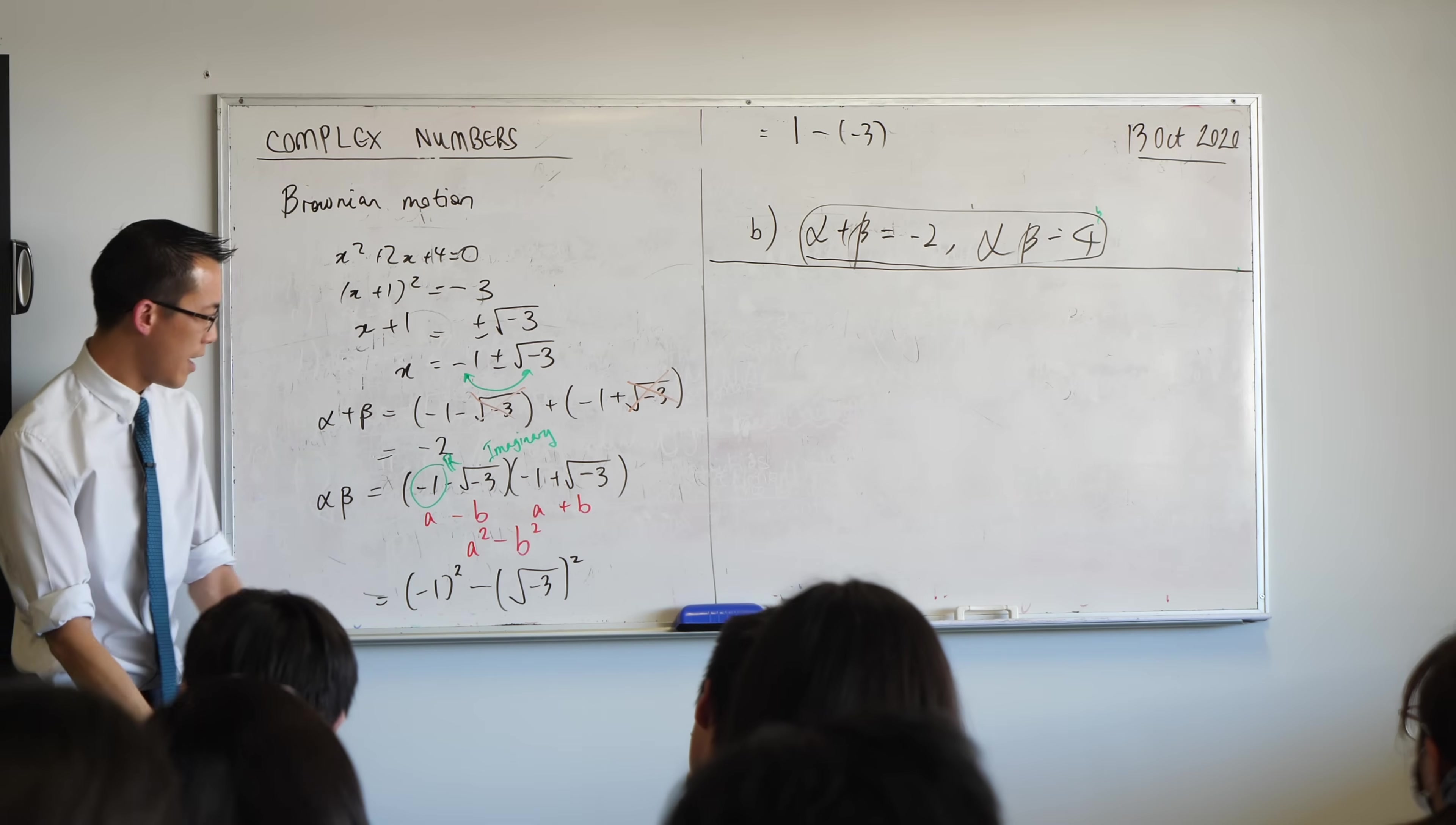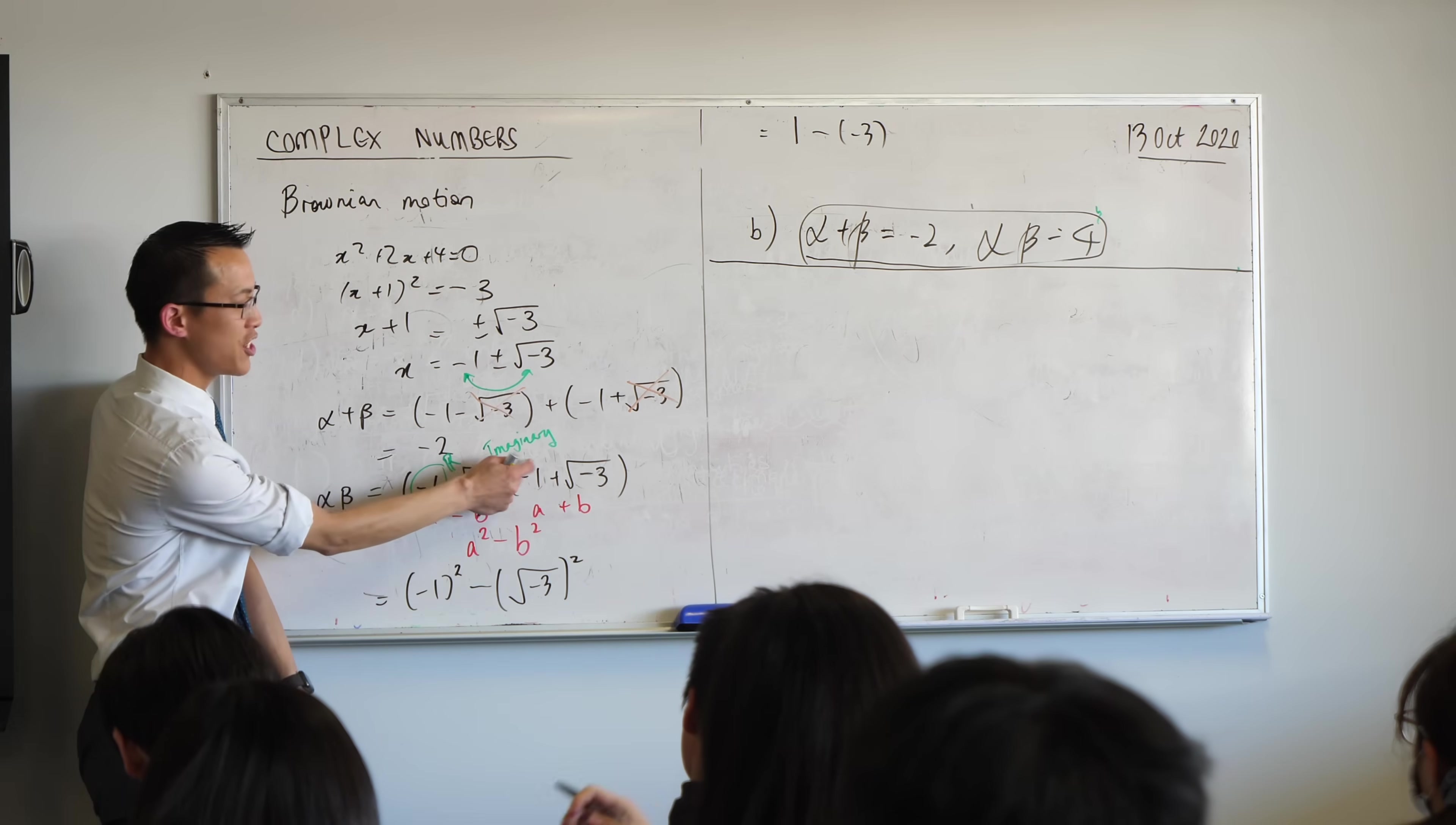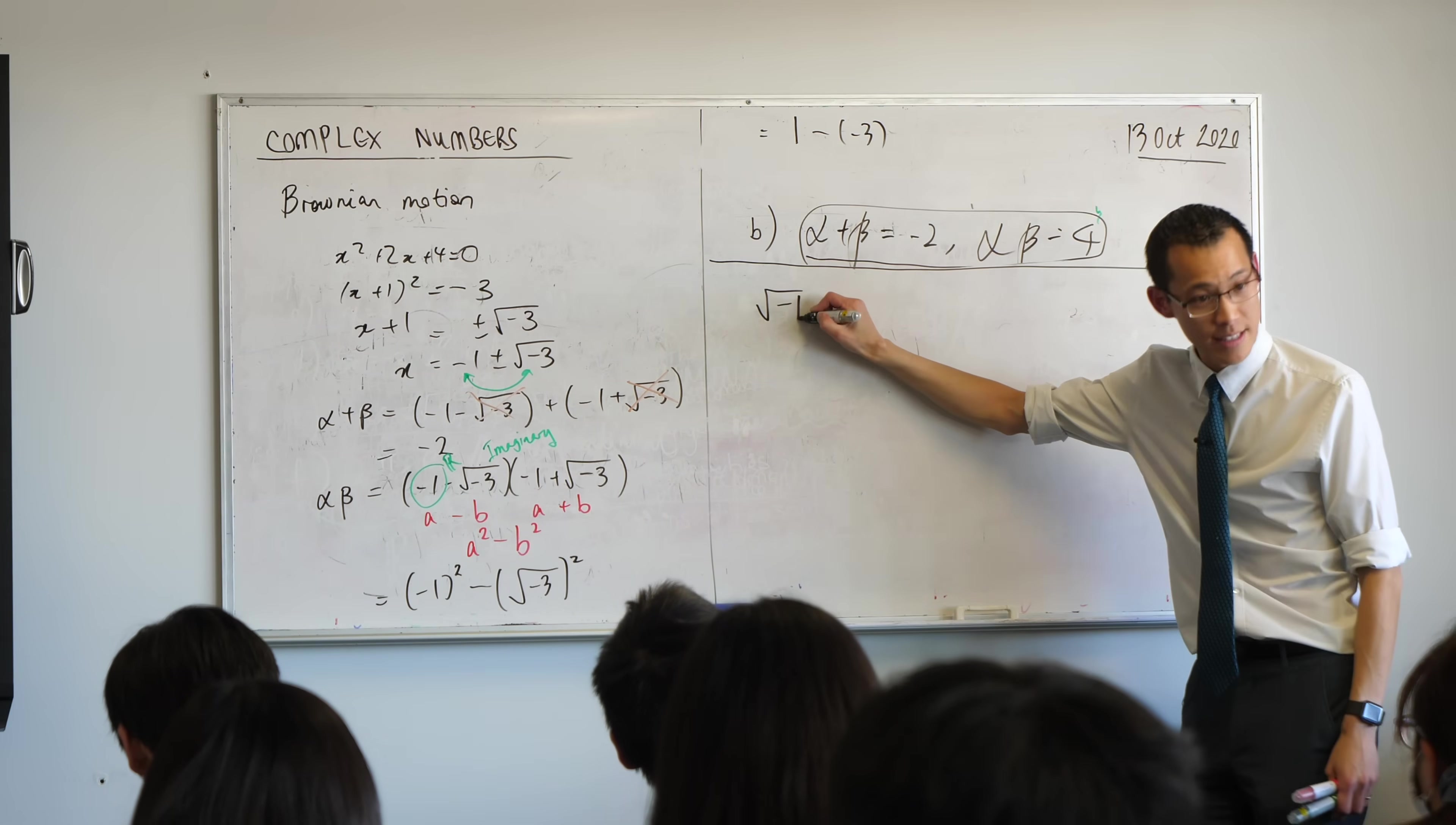So what we're going to do is we're going to try and stop writing negative numbers under square roots because it gives me the heebie-jeebies. We're going to introduce what we call an imaginary unit. The most basic negative number that you can take a square root of is negative 1.